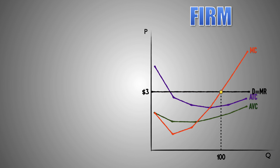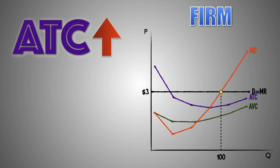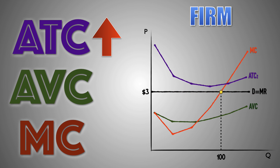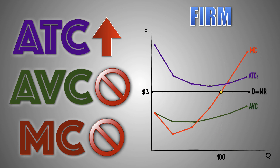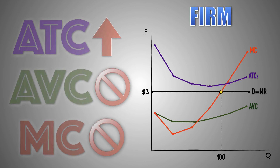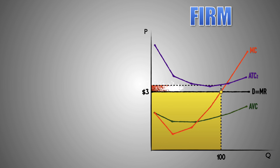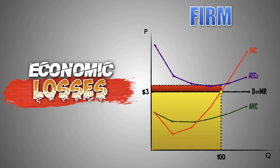On the other hand, suppose that rent increases for the firm. The average total cost increases at every output level, which will be visualized with an upward shift of the ATC curve. Again, because fixed costs have no influence on average variable cost or marginal cost, the AVC and MC curves will not shift, and the firm's profit maximization point will remain the same. As a result, the quantity of output produced by the firm will not change, and the firm's total revenue will stay the same, but the firm will earn fewer economic profits, or may even start taking economic losses, because total costs have risen.